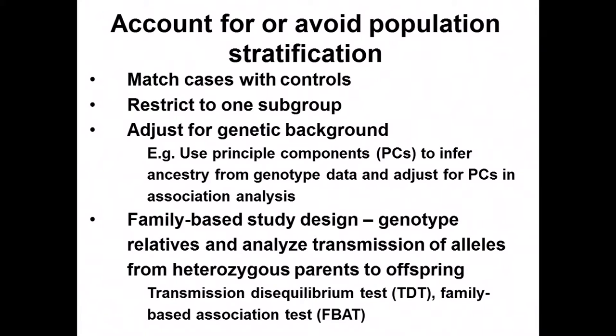To account for or avoid population stratification, one approach is to match cases with controls so that subpopulations don't differ between groups, or restrict the study to one subgroup. You can also adjust for genetic background using principal component analysis on allele frequencies across the genome to infer ancestry from genotype data, then adjust for those main factors in the association analysis. An alternate strategy is a family-based study design, genotyping relatives and analyzing transmission of alleles from heterozygous parents to offspring.